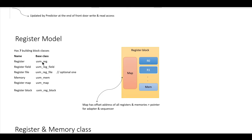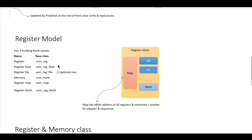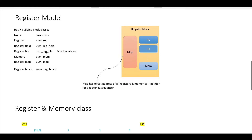For a particular register, some fields are defined, and the base class for a register field is UVM reg_field. For example, this register we are considering has 4 fields: mode enable, debug enable, parity enable, and reserved. This register is 32 bits wide (bits 0 to 31). If there are multiple registers in the DUT, we can optionally define a register file, and the base class for that register file is UVM reg_file.